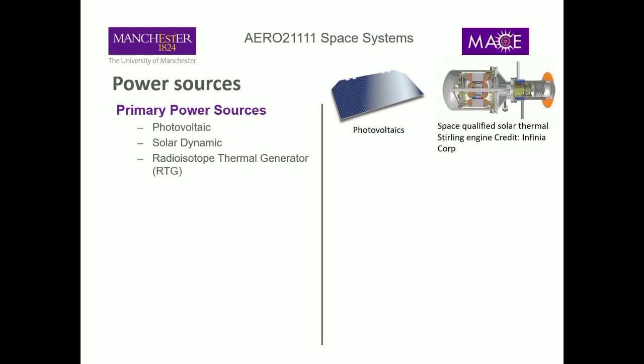Solar dynamic uses something like a Stirling engine — a closed-cycle system to heat up a fluid using solar energy, which pushes it around generating kinetic energy that can be converted into electrical energy. It's not very common and not used very often, but some early lunar systems did use solar dynamic systems.